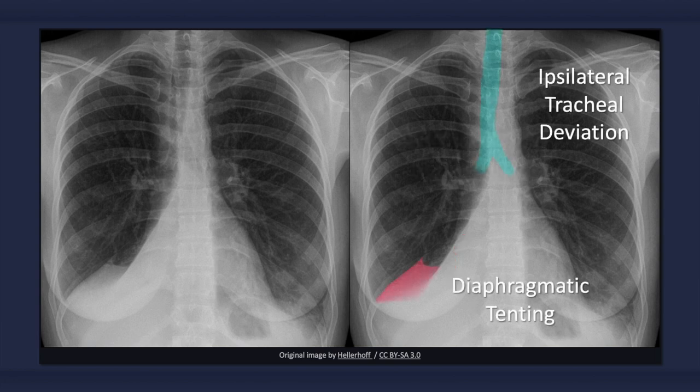Atelectasis may also result in signs of decreased lung volume, which can include ipsilateral tracheal deviation, depression of the minor fissure, and elevation of the right hemidiaphragm — a radiographic sign that is referred to as tenting.